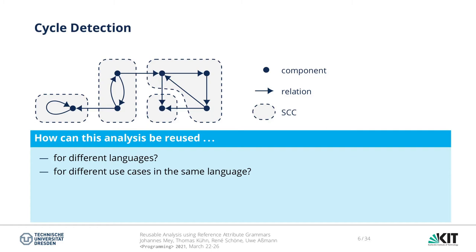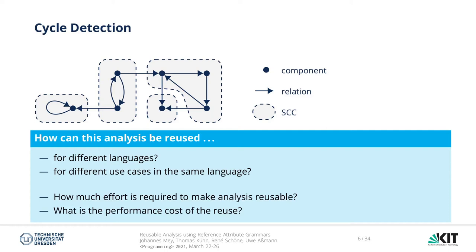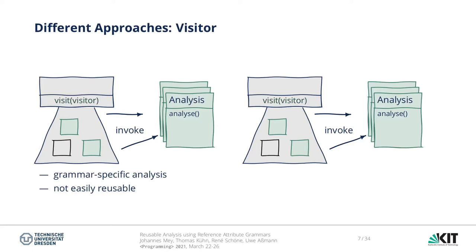We can simply abstract the data structures on which the analysis is performed. There is a set of components and a relation — this is all we need to do this SCC analysis. So how can this analysis be reused for different languages and for different use cases within one language? And because we know reuse usually has a price, we also ask how much additional effort is required to make an analysis reusable, and how big the performance penalty is. Before we present our solution, let's have a quick look at how analysis can be specified, how different approaches enable reuse, and what additional effort is required.